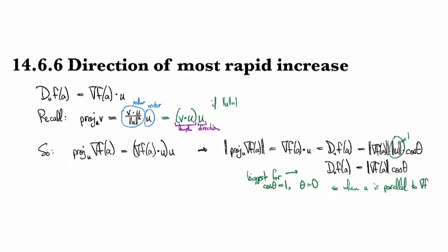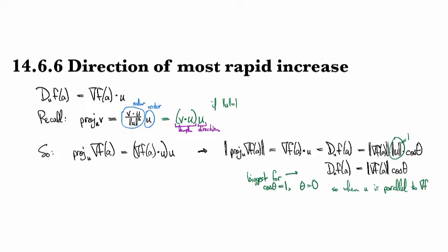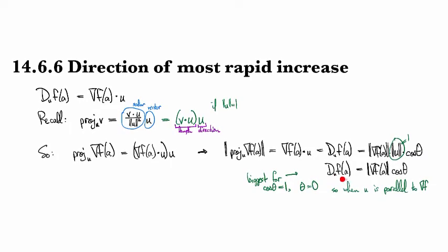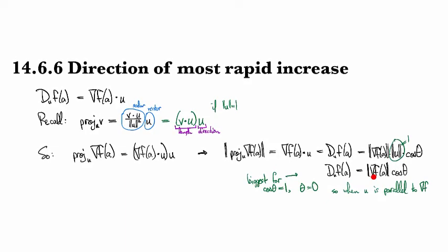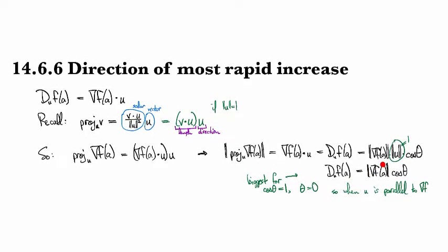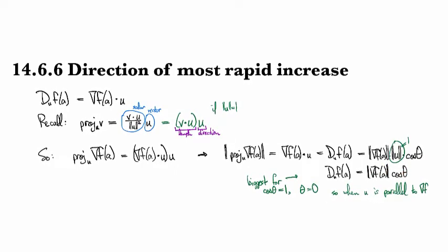And so back in the beginning, I told you that the gradient gives you the direction in which f is increasing the fastest, and now this shows you exactly why that is true, because the directional derivative of f is going to be biggest when we move in a direction parallel to where the gradient itself is pointed, in other words, where theta is equal to 0.